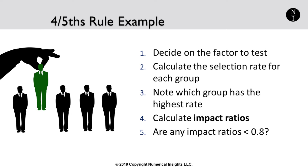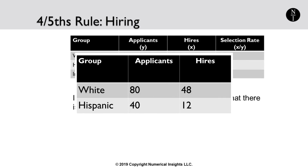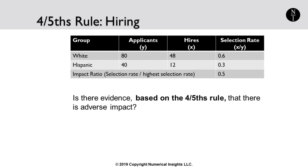For this fictitious company, 120 people applied for jobs in the last year — 80 identified as white and 40 as Hispanic. For white applicants, 48 were hired from 80, giving a hiring rate of 0.6, or 60%. For Hispanics, 12 were hired from 40 applicants, giving a selection rate of 0.3, or 30%. The largest selection rate is 0.6. Dividing 0.3 by 0.6 gives an impact ratio of 0.5. Since 0.5 is less than 0.8, we can conclude that the hiring process may be biased when analyzing the factor of ethnicity.